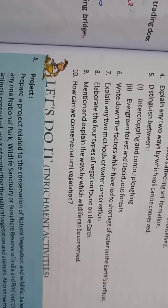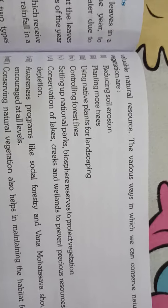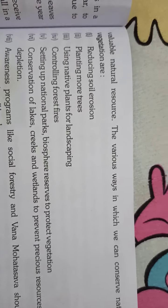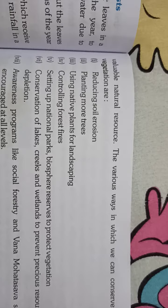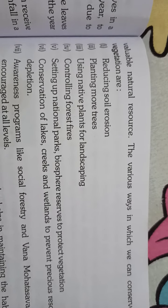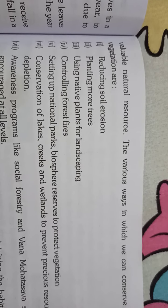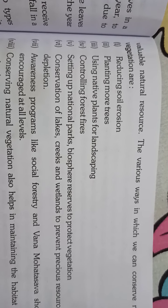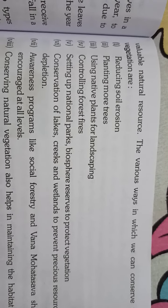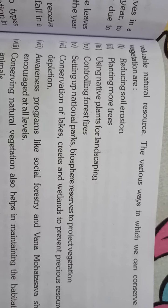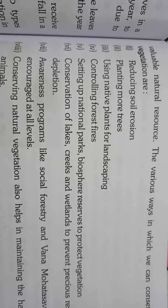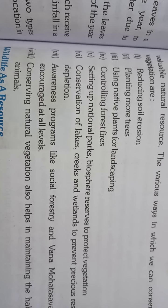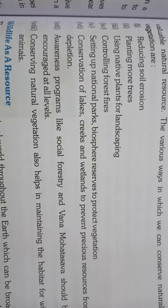Question number 10: how can we conserve natural vegetation? Page number 145. The various ways to conserve natural vegetation are: first, reducing soil erosion; second, planting more trees; third, using native plants for landscaping; fourth, controlling forest fires; and fifth, setting up national parks and biosphere reserves to protect vegetation.